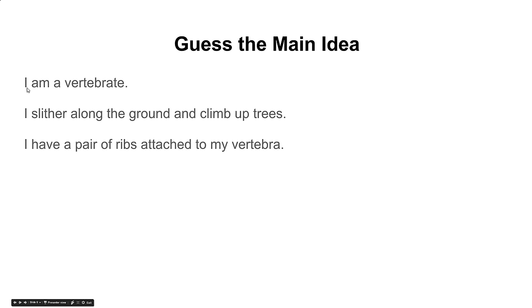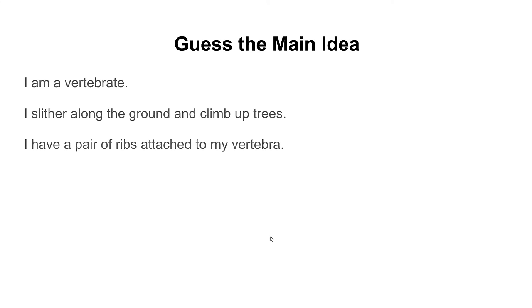Last one. I am a vertebrate. I slither along the ground and climb up trees. I have a pair of ribs attached to my vertebra. Hmm — what's the main idea? Remember that the clues in all of these supporting ideas are about that main idea for this passage.